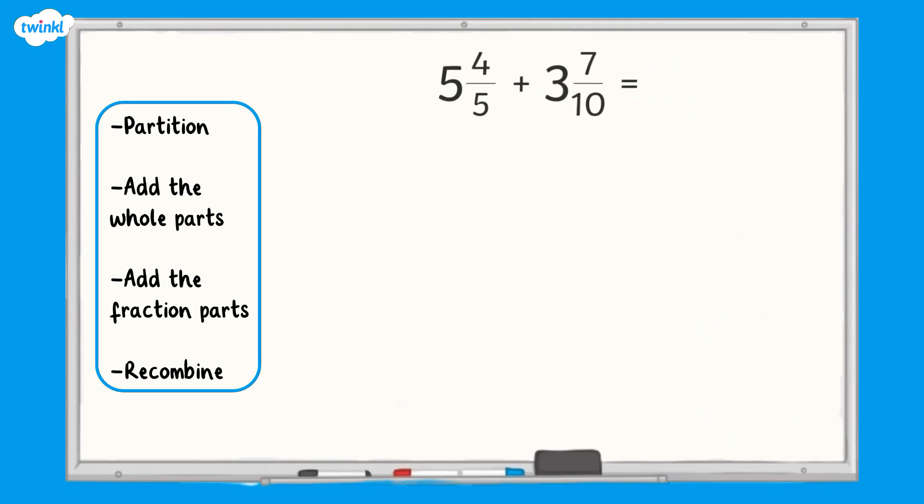Now for a final calculation. Five and four-fifths add three and seven-tenths. Solve the calculation and see what you notice is different about this calculation. How did you get on?